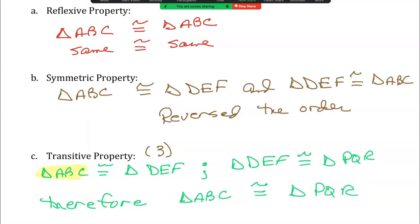Look what I've said. If this is congruent to this, and this one is congruent to this, then I can say yellow is congruent to pink.